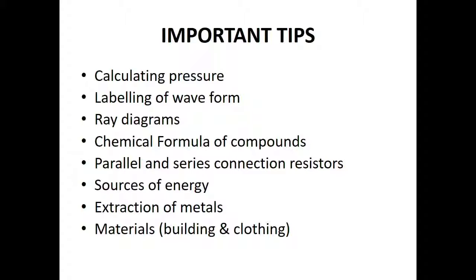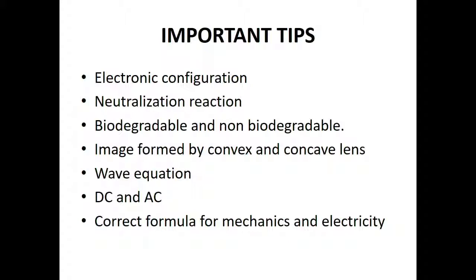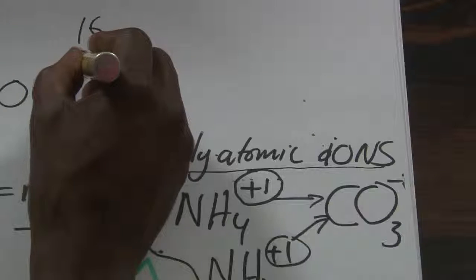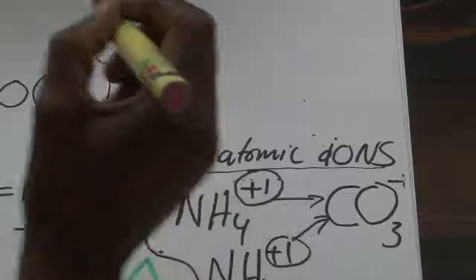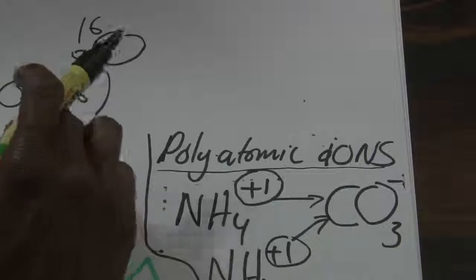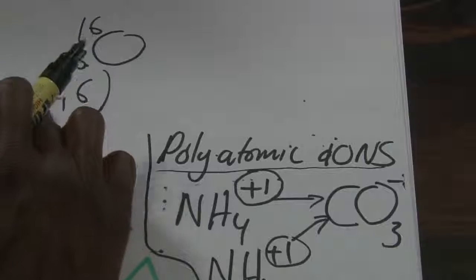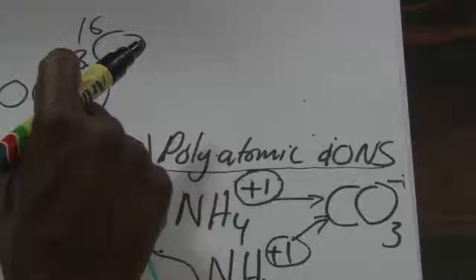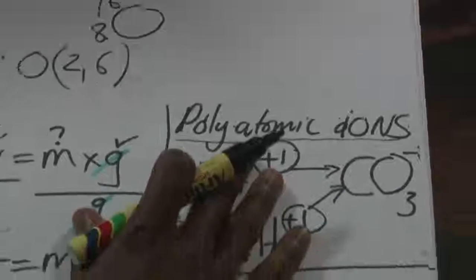All three exams cover these things — please make time for them. Electronic configuration: remember it. For example, oxygen is O, atomic number 8, mass number 16. All 8 electrons: 2 in the first shell, 6 in the second. So oxygen is in the second period and in the sixth group, because the last shell contains 6 electrons. Very important.